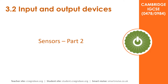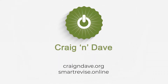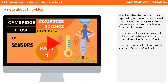In this video we take another look at sensors in a bit more detail. This video identifies the type of data captured by each sensor you need to know about, including examples of selecting the most suitable sensor for a given context. We're going to assume you've already watched and are comfortable with the content in our video Sensors Part 1, so if you haven't seen it yet go back and watch that first.